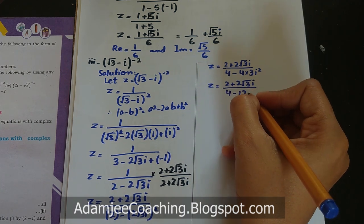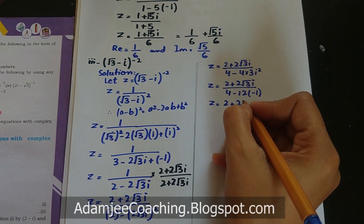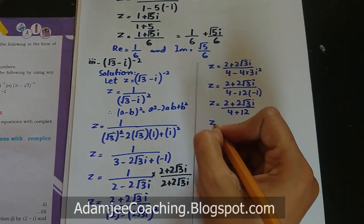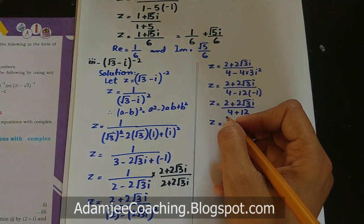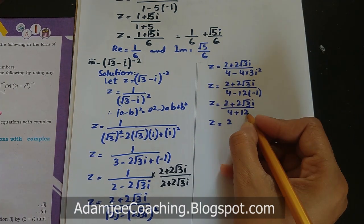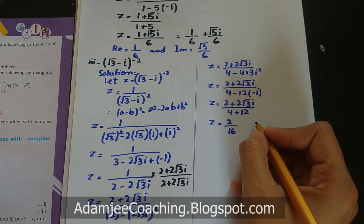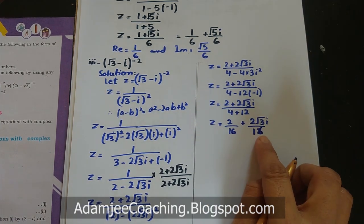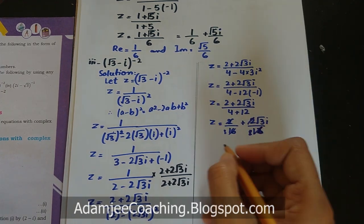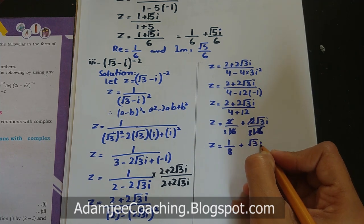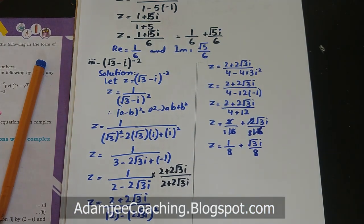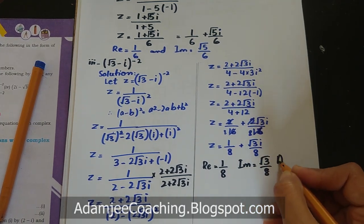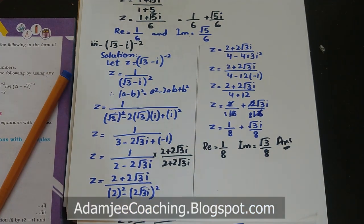Denominator = 4 - 4×3×iota² = 4 - 12×(-1) = 4 + 12 = 16۔ تو z = (2 + 2√3·iota)/16۔ Simplify: z = 2/16 + (2√3/16)·iota = 1/8 + (√3/8)·iota۔ Real part Re = 1/8 اور Imaginary part Im = √3/8۔ یہ تھا part 3 کا answer۔